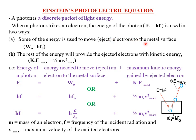The energy used to move the electron to the metal surface is the work function, denoted W₀ = hf₀, where f₀ is the threshold frequency. Once these electrons get to the surface of the metal, there is still some remaining energy. The rest of the energy provides the ejected electrons with kinetic energy to move away from the metal surface. Kinetic energy is the energy of motion, so the remaining energy is used to move the electron away from the surface.